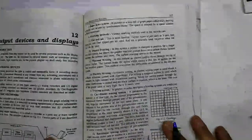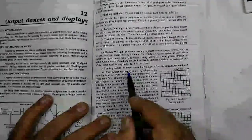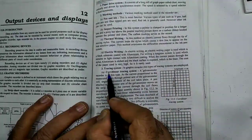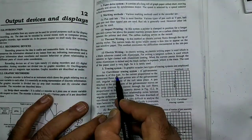The cost of the paper used in this system is very high, so it is rarely used. Now, the tracing system. In graphic recorders, two types of tracing systems are employed. First is curvilinear tracing system. A galvanometer recorder is of this type.